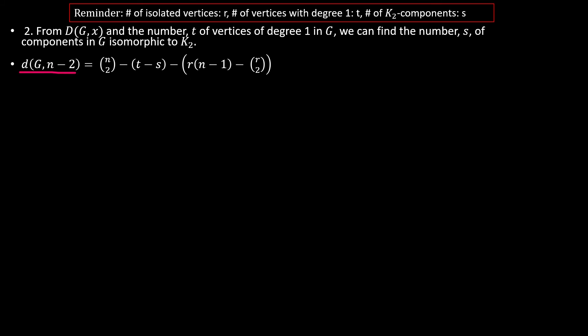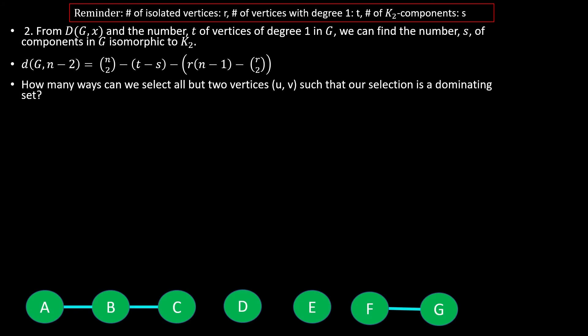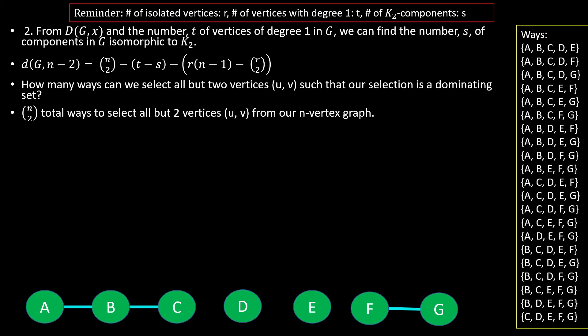Now let's look at where this equation comes from. One way to think about it is that we're trying to find how many ways we can select all but two vertices from our graph such that our selection is a dominating set. Selecting all but two vertices can be reframed as selecting two vertices to leave out or exclude. The number of ways we could select all but two vertices without requiring a dominating set would be n choose 2, the first term in our formula.